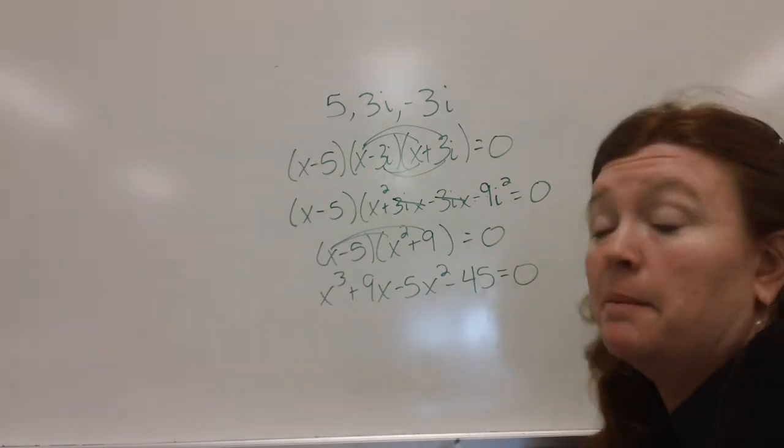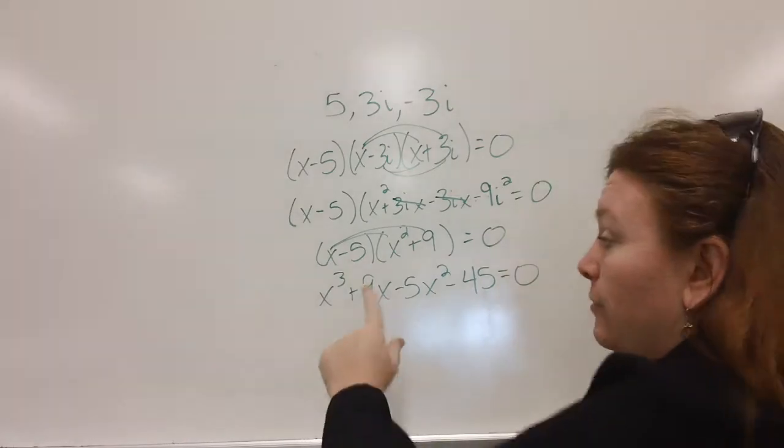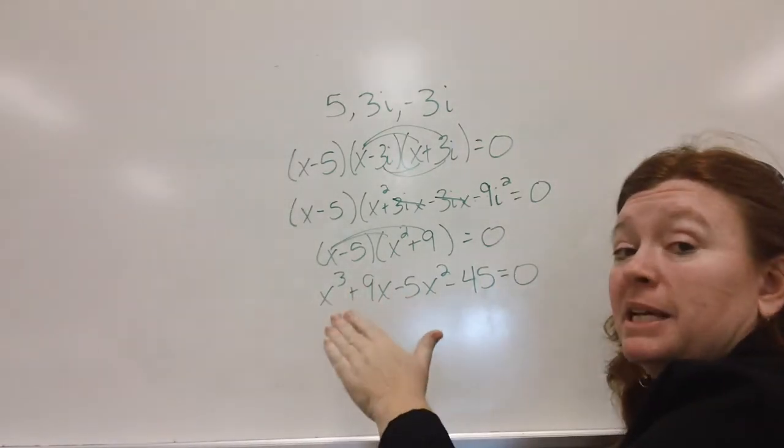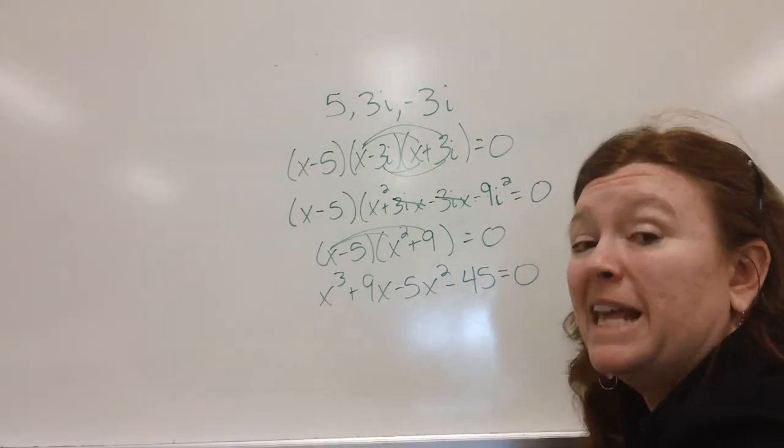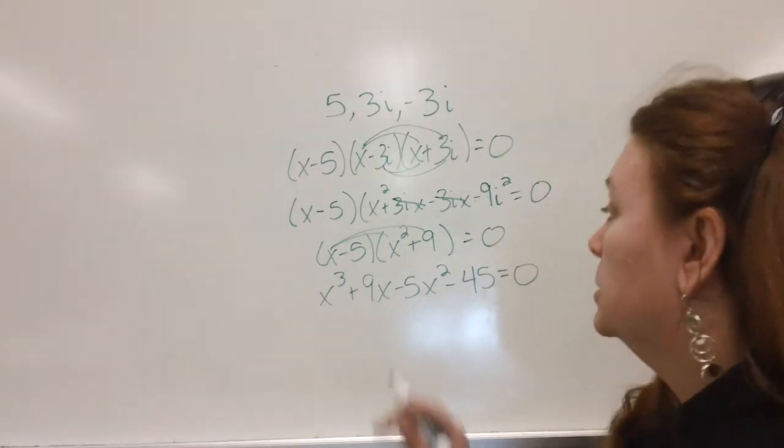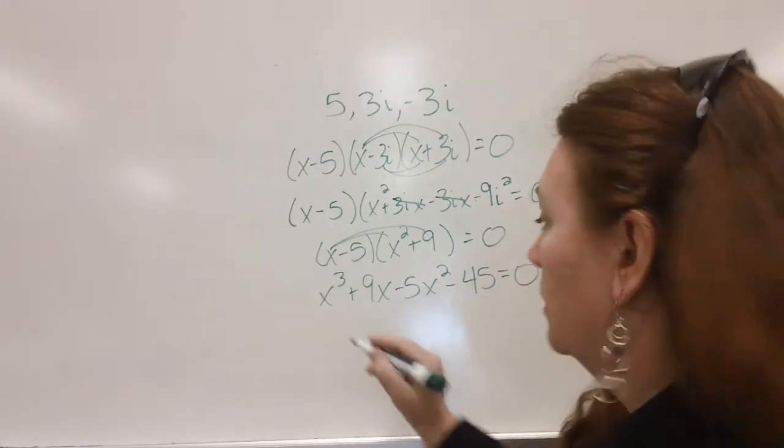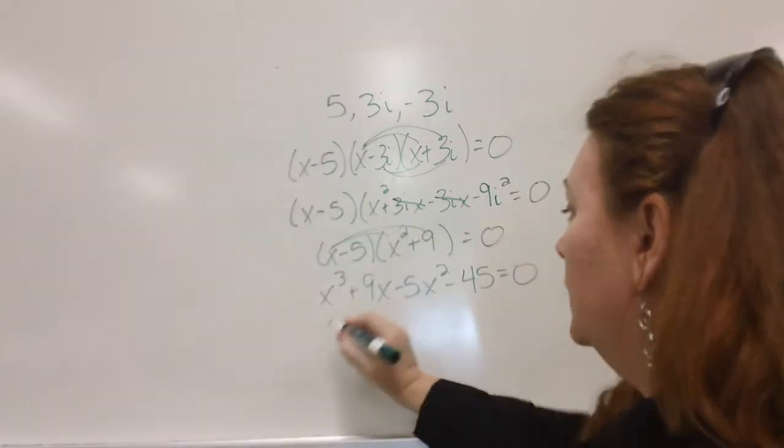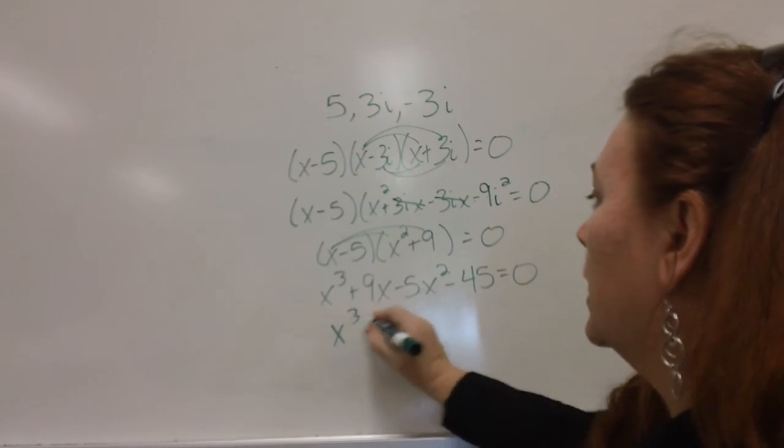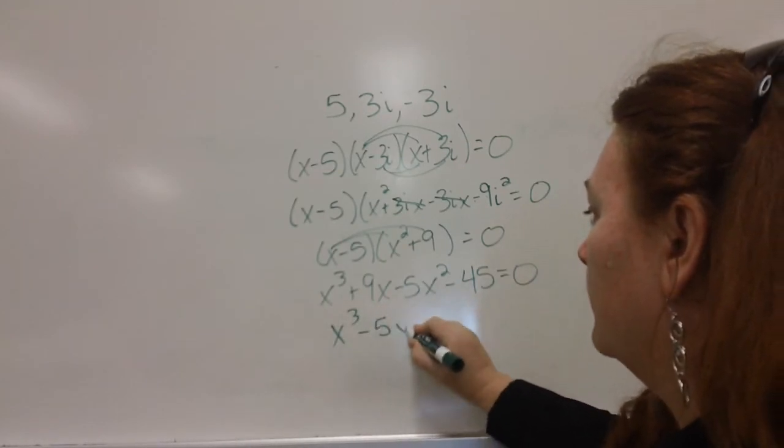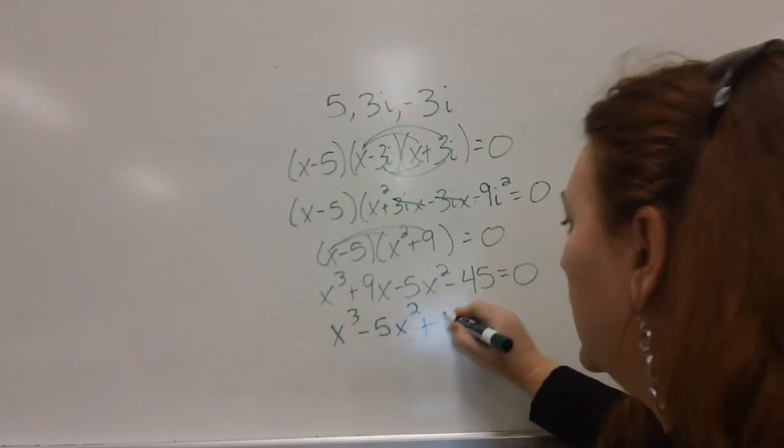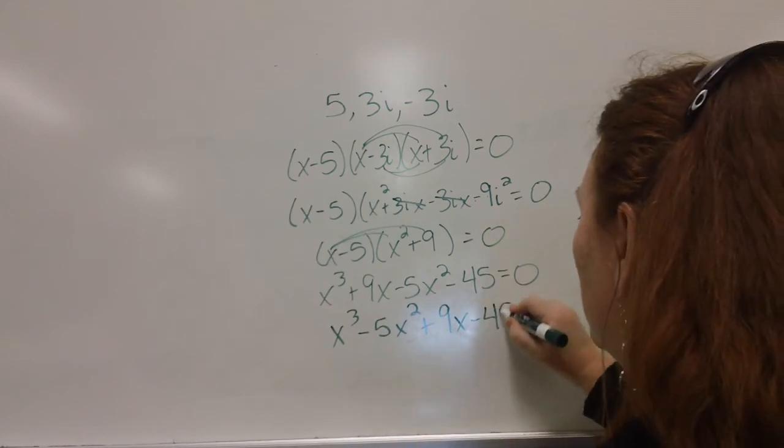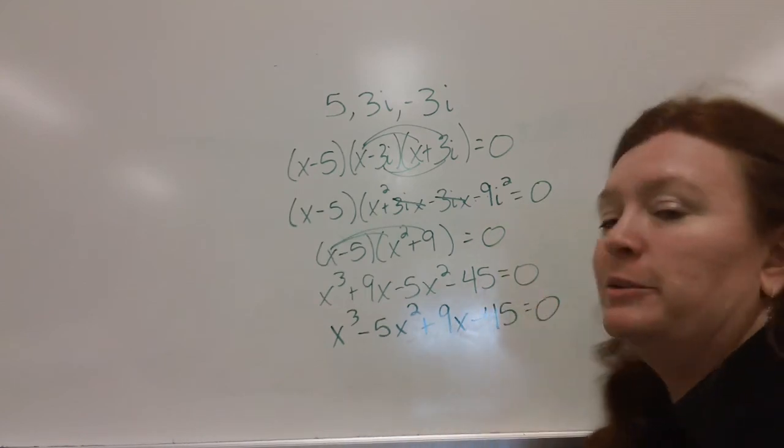However, math etiquette says you do not have the third power, the first power, and then the second power. They need to be in what we call descending order. So, I need to rearrange it. That's all. Make sure you take the signs with you when you move a term. I have an X to the third. I have a minus 5X squared. I have a plus 9X to the first. And I have a minus 45. There's my answer.